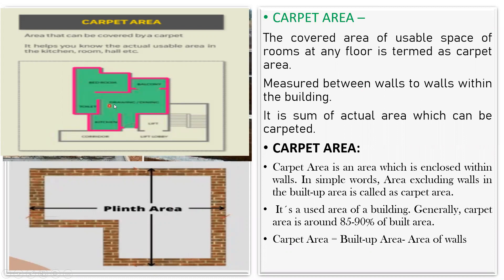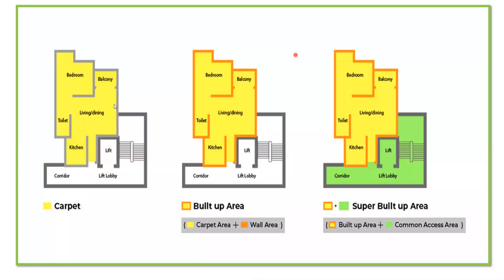Now we'll see the difference between built-up area, carpet area, and super built-up area. The built-up area is the wall thickness plus the carpet area together. Carpet area plus wall area together is called built-up area, which is also called plinth area. If you deduct the wall from the built-up area, whatever you get — the bedroom portion and all the yellow color — that is the carpet area.